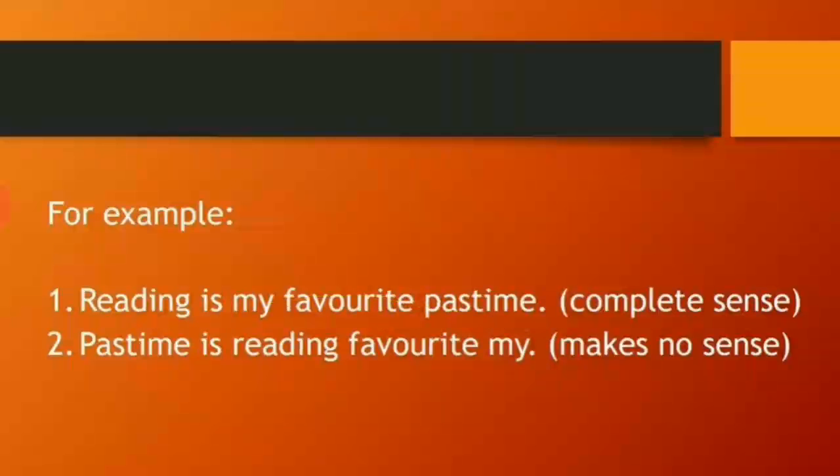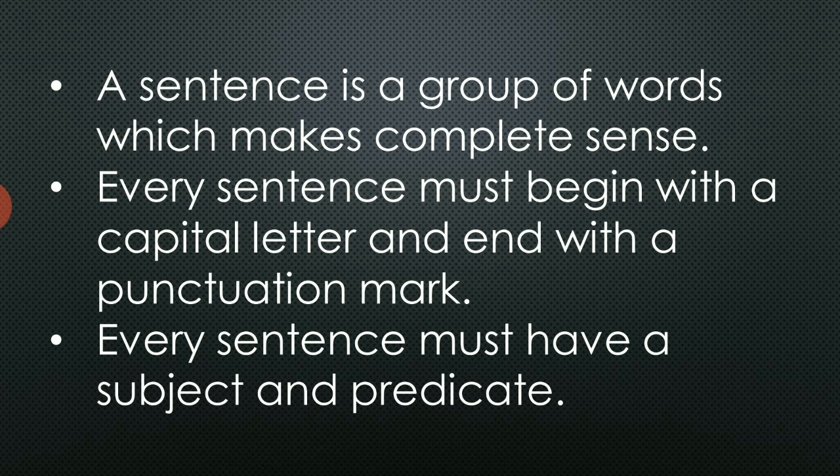Let us observe some sentences. 'Reading is my favourite pastime.' Is it making complete sense? Yes. 'Pastime is reading favourite my.' Is it making any sense? No. So a group of words that makes no sense is known as jumbled words. And the group of words which makes complete sense is known as a sentence. So you should remember that a sentence is a group of words which makes complete sense.